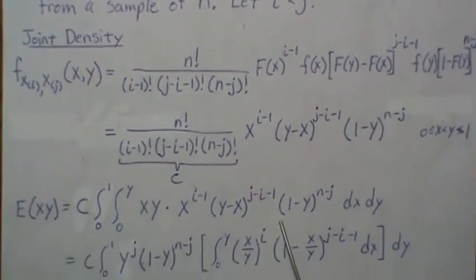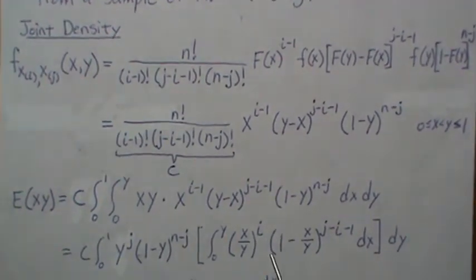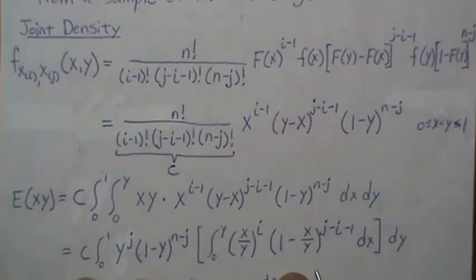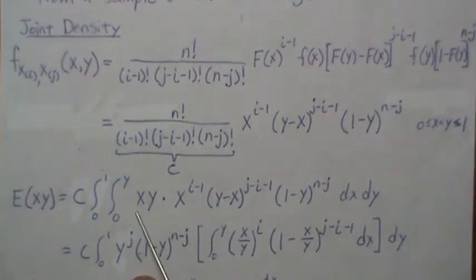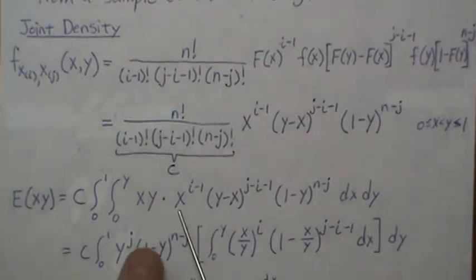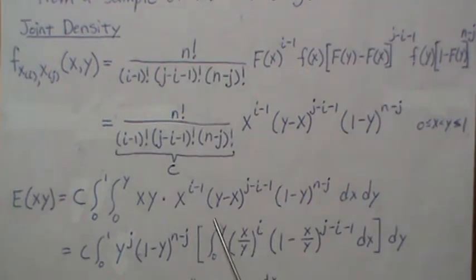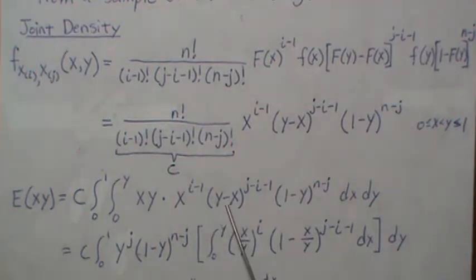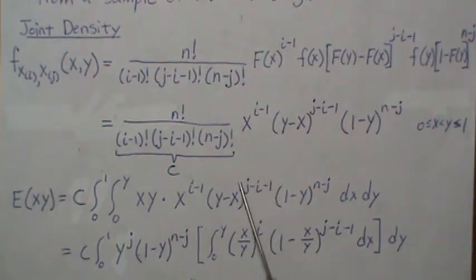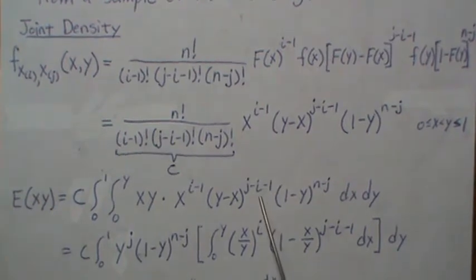Now what happens next is it's a transformation or rearrangement just to make the integrals easier. So notice the 1 minus Y raised to the n-j comes down. Here the X and the X to the i minus 1, those combine to get, that's how we get the X to the i. Now this piece here, we factor out a Y, and then we get this. So if we take this times Y, we get Y minus X, which we get this back.